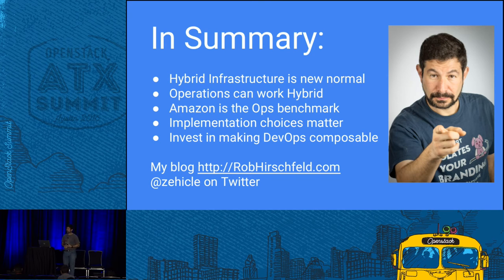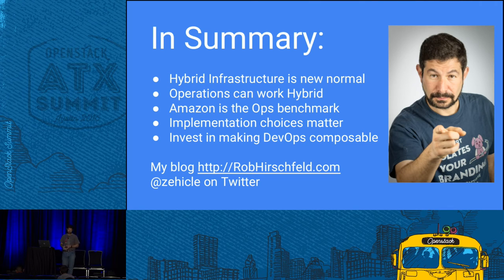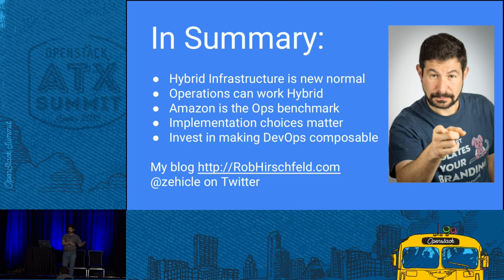Two: operations can work hybrid. It is possible to write operational automation and hybrid DevOps capabilities, but you have to be able to isolate those changes — and I really suggest thinking about how this translates, because it will make all of your automation more resilient. Three: Amazon is the operational benchmark. Even if you are OpenStack-only, the closer you are to Amazon practices and patterns, the faster your team is going to go, the more resilient you'll be, and the more easily you'll take in technologies from the community.